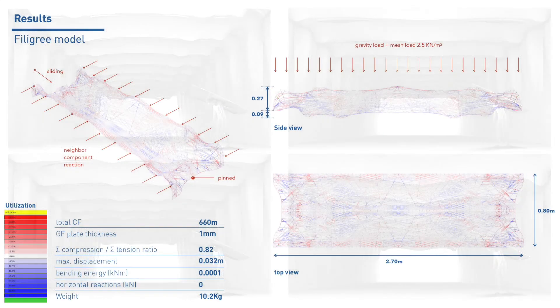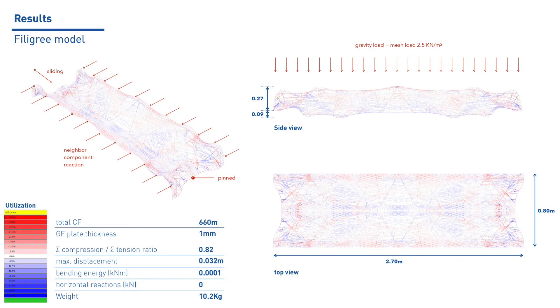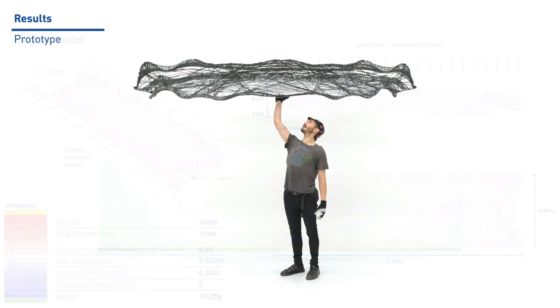One of the samples is selected to generate the filigree model for fabrication, based on a combination of good mechanical performance, simple support condition, and spatial quality. A prototype of 2.7 meters of span, 80 cm width and 36 cm height is fabricated, weighing only 10.2 kg.